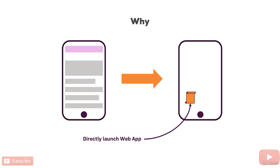Think about your own behavior on your smartphone: you probably visit the same apps a lot, and you typically do so by simply tapping on icons on the home screen. So if we can get our web app on that home screen, we would drive user engagement — and that can only be good for us.